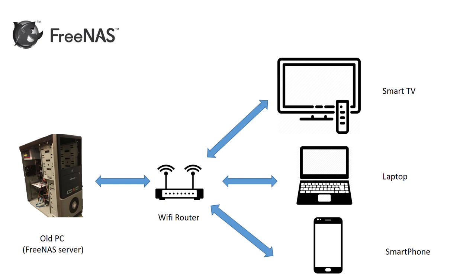In this slide we can see that you have an old PC which we will set up as a FreeNAS server. This PC acts as a server, connects to your Wi-Fi router, and then gives services to a smart TV, laptop, and smartphone. Essentially you'll have a virtually free server — you pay the electricity bills — and can access premium services similar to Google Drive, Dropbox, Netflix, and Amazon Prime.